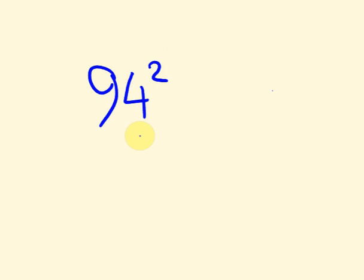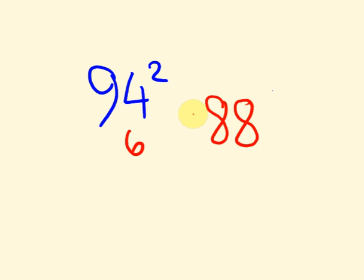Another number below 100 — 94 squared. This is 6 below 100. So 6 plus 6 is 12, and 100 take away 12 is 88. Then 6 times 6 is 36, giving us 8836. That's a pretty cool trick, eh? Hope you get that. Hope it's working well for you. See you next time.